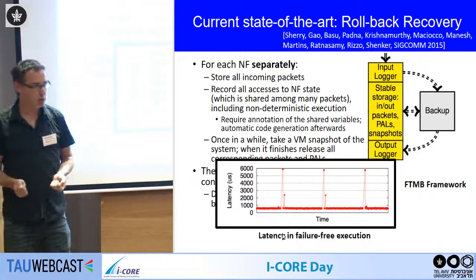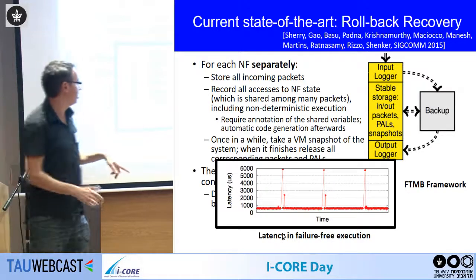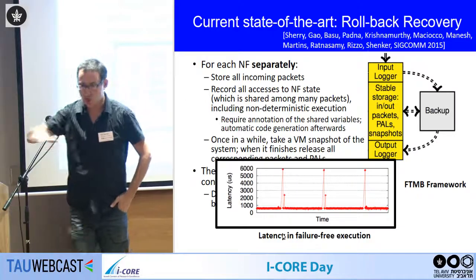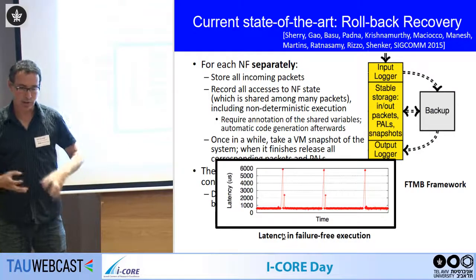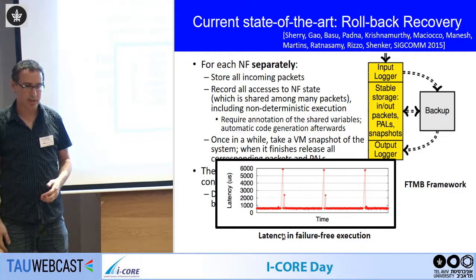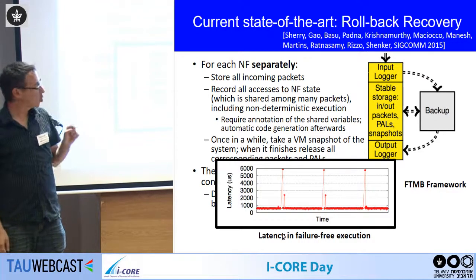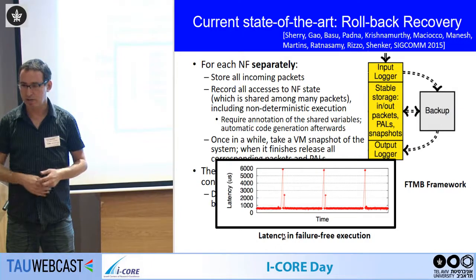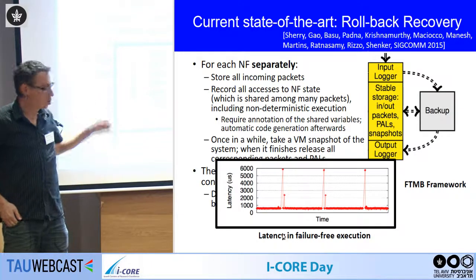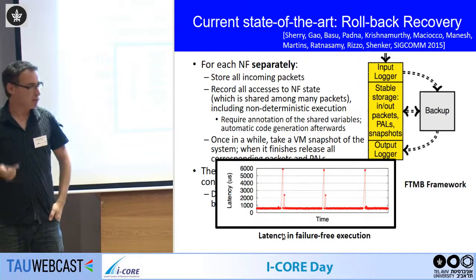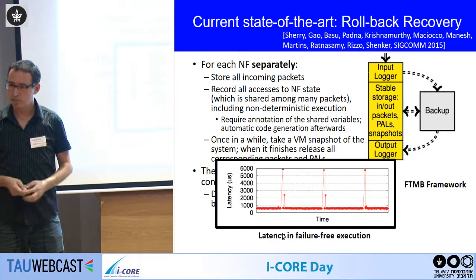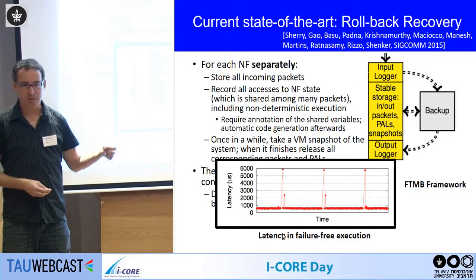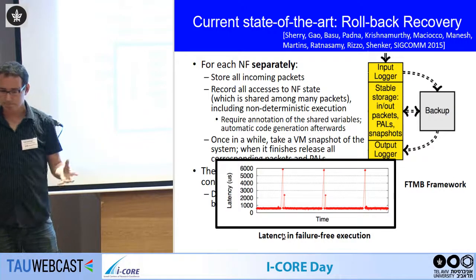We took a different approach to eliminate the overhead of these snapshots. We use a master and a slave where the slave follows the master in a specific way designed to cope with non-determinism and shared state, reducing the cost of snapshots. Another benefit is that instead of treating each network function in the chain separately, we treat the entire service chain together — we save the packet only once at the beginning of the chain and release it at the end.